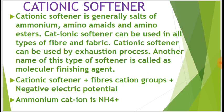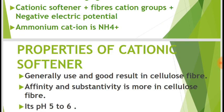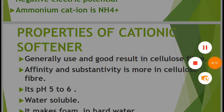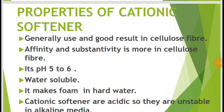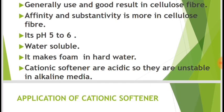It has negative electric potential. The ammonium cation has NH4+ properties. Properties of cationic softener: generally used and gives good results in cellulose fibers. Affinity and substantivity is more in cellulose fiber. Its pH is 5 to 6, it is water soluble, and it makes foam in hard water. Cationic softeners are acidic, so they are unstable in alkaline media.